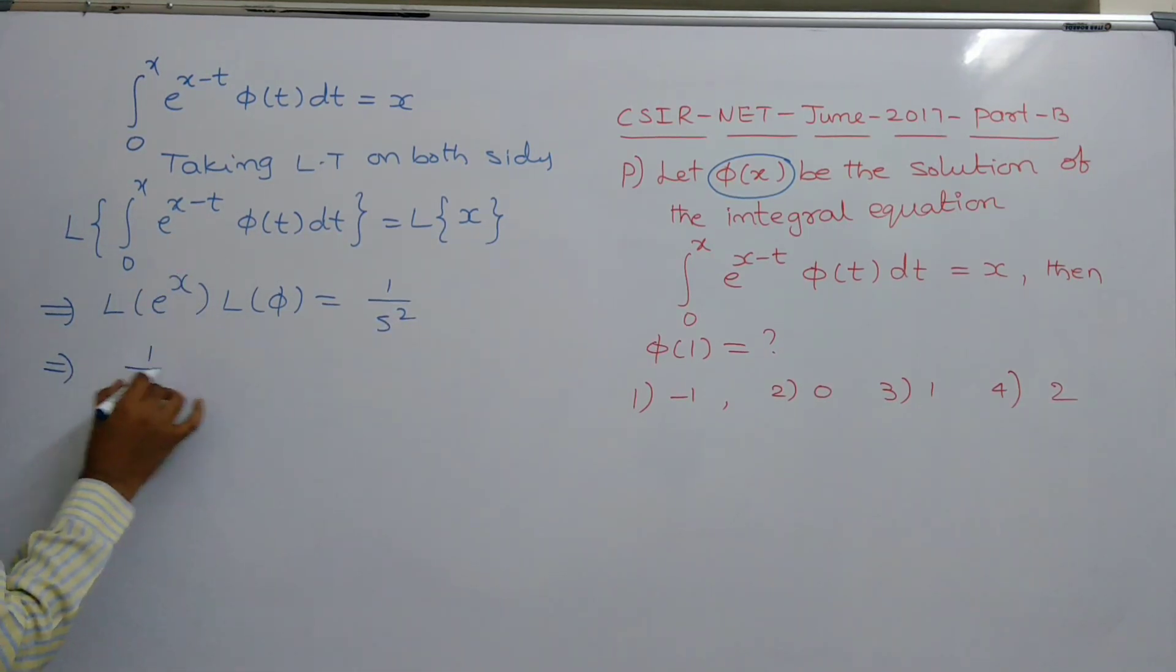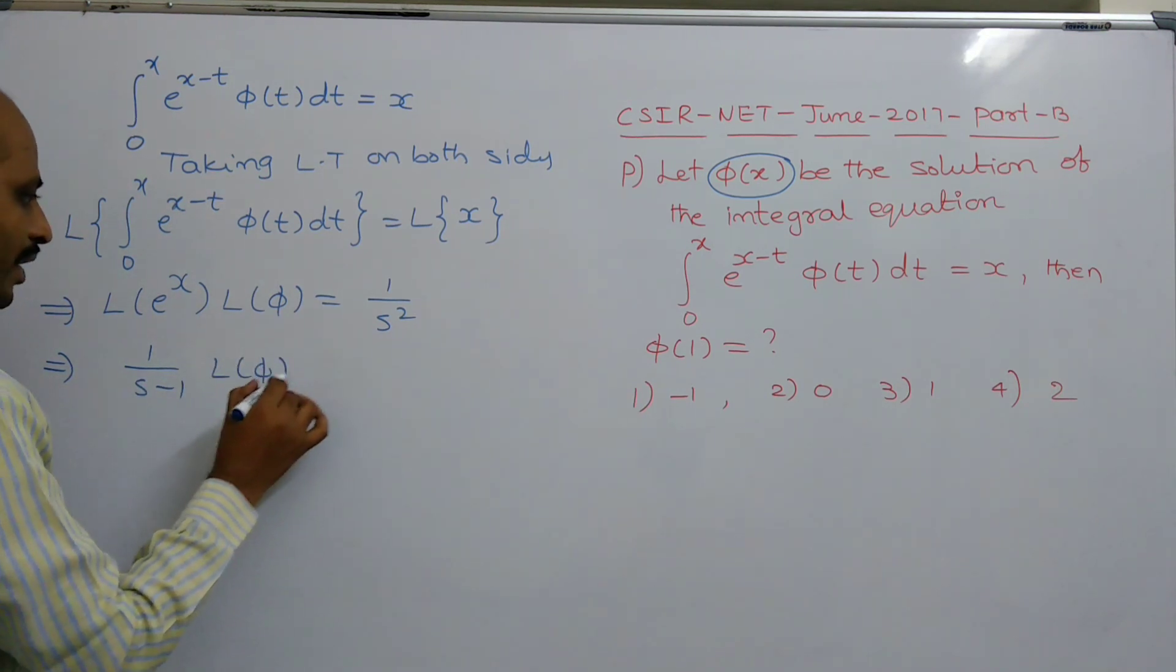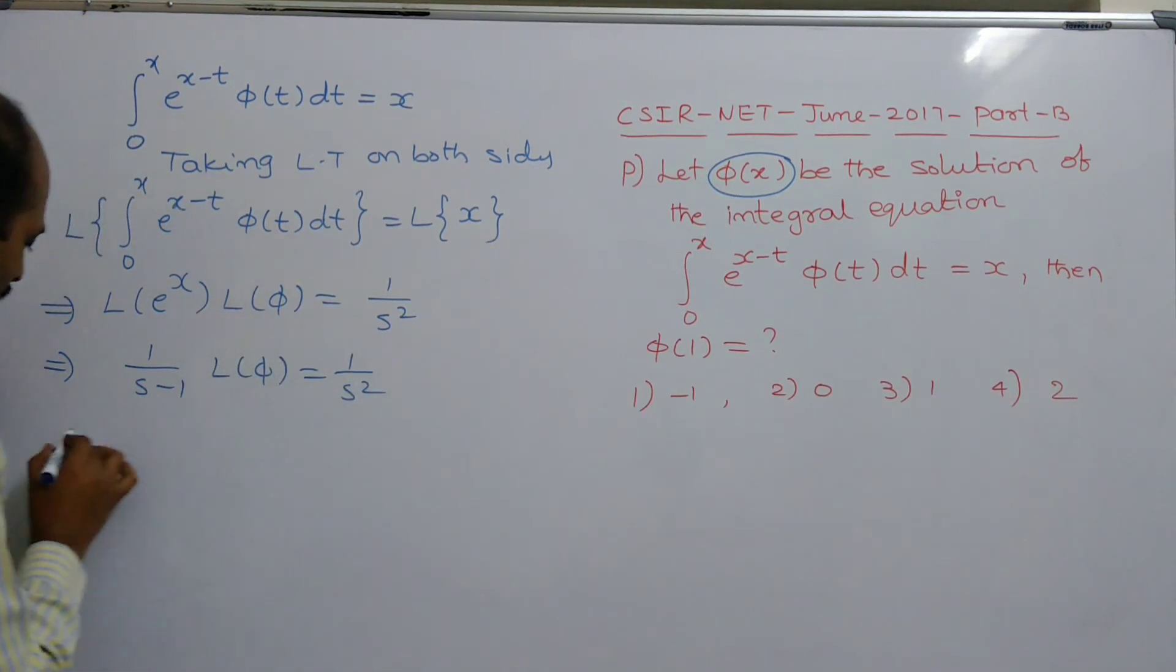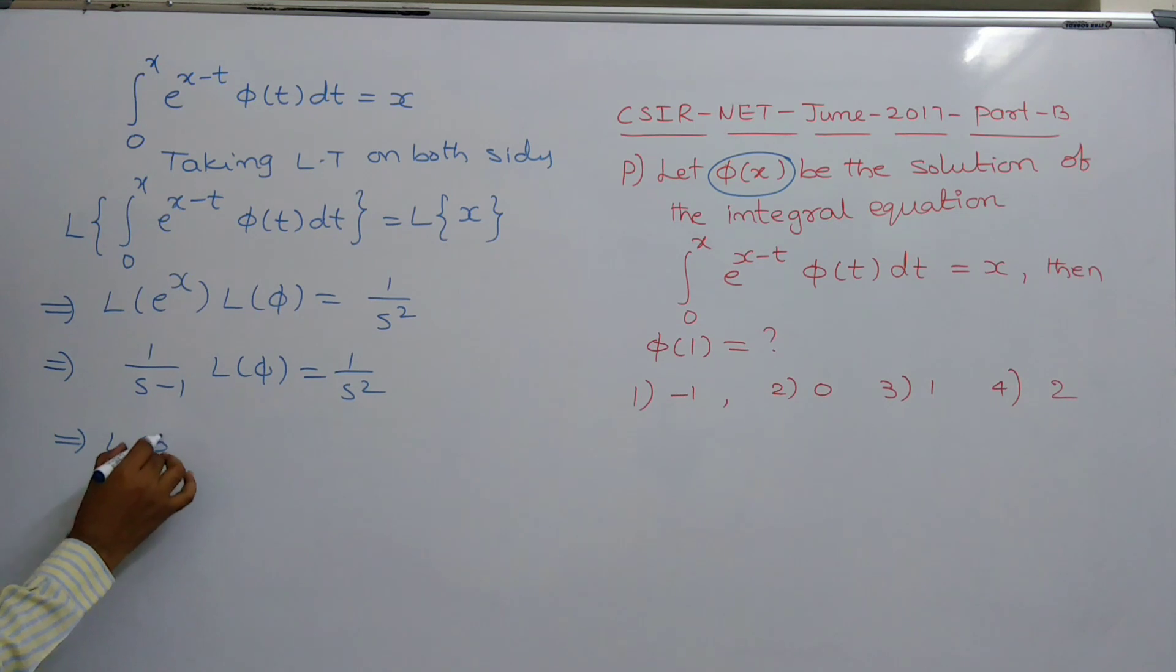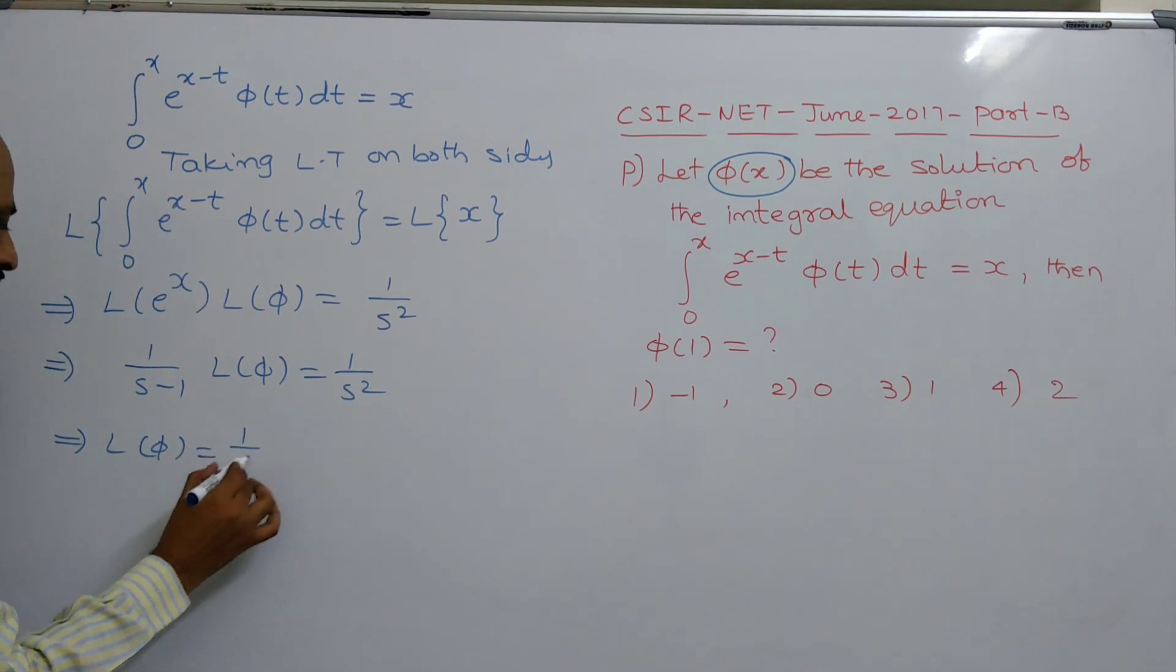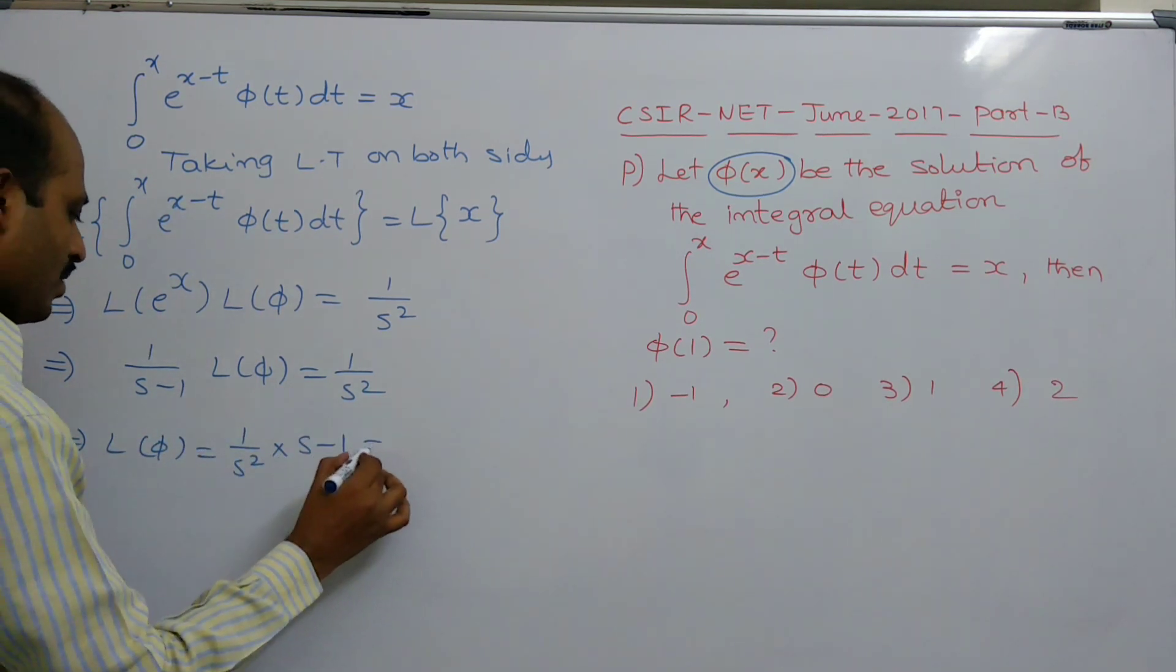L of e power x, 1 by s minus 1, into L of φ equals 1 by s square. What is L of φ? L of φ equals 1 by s square into s minus 1.